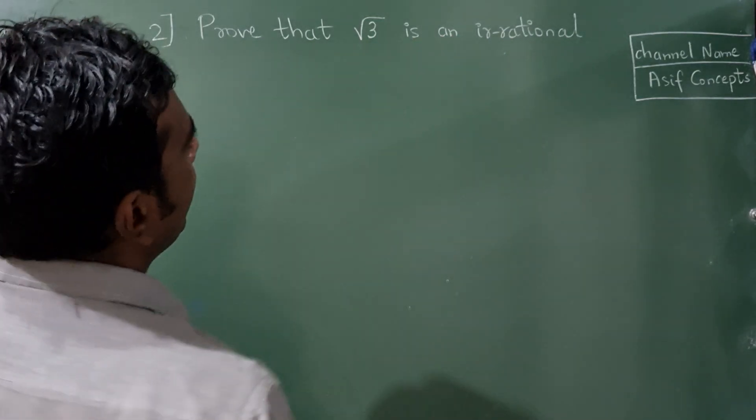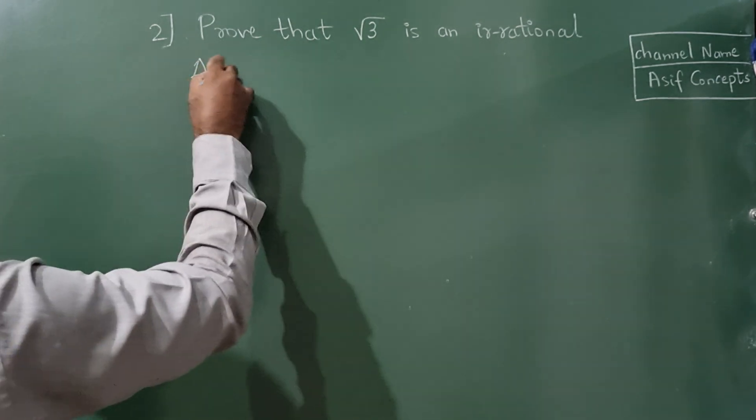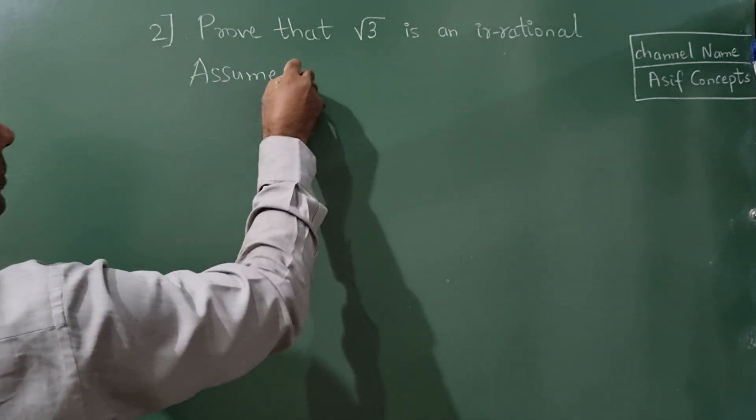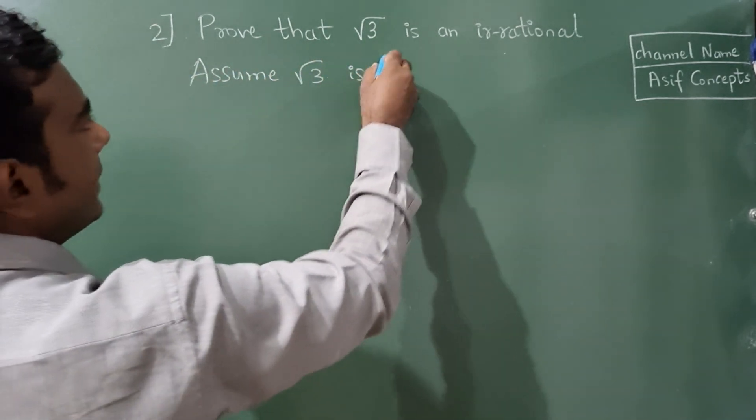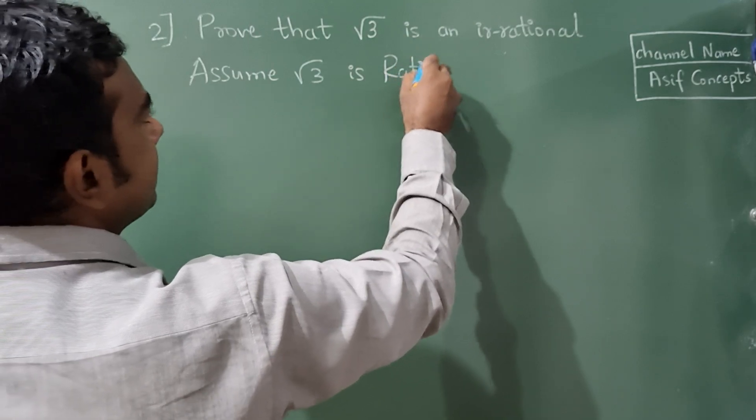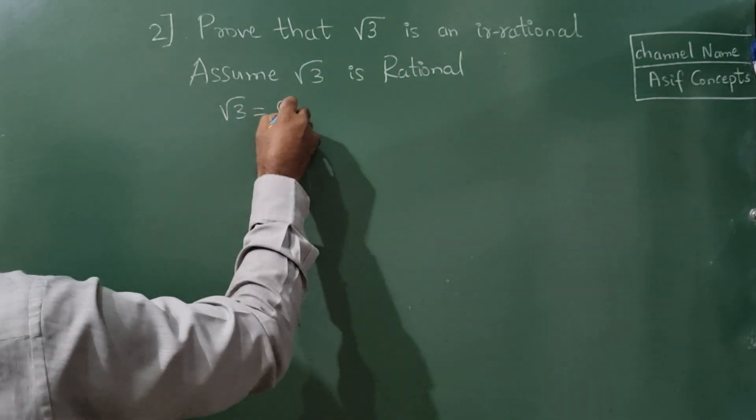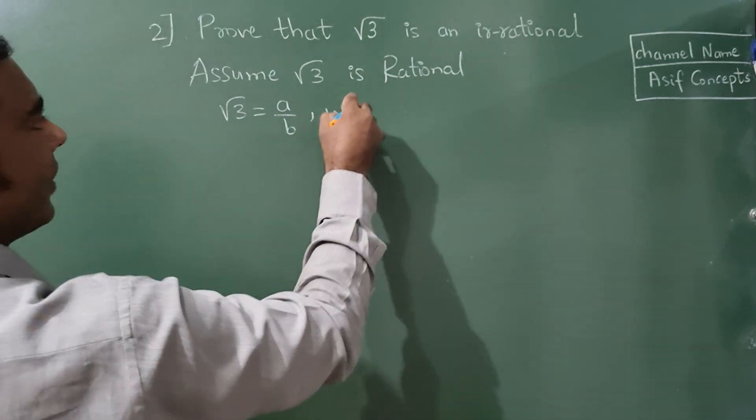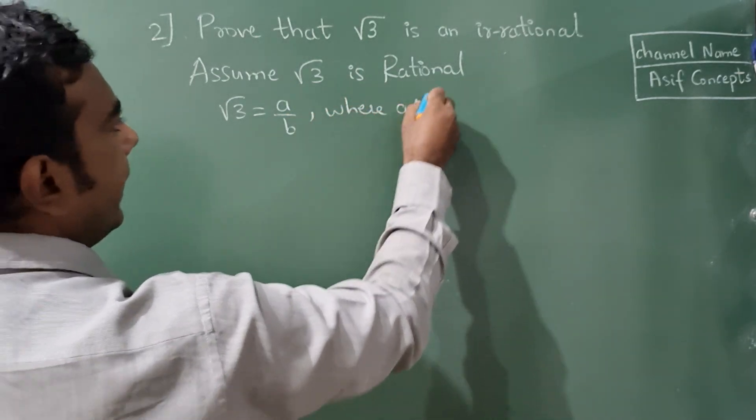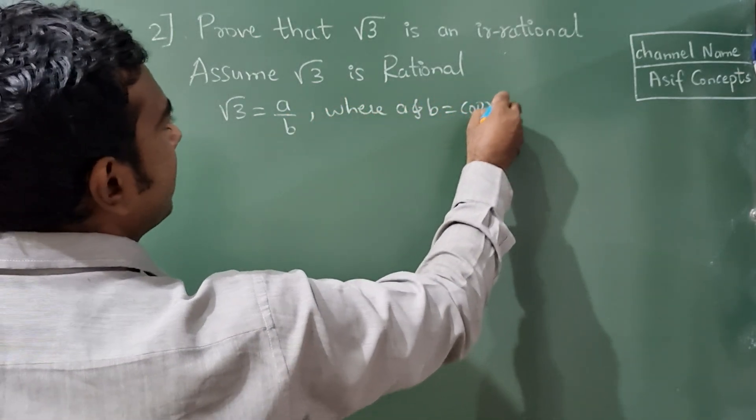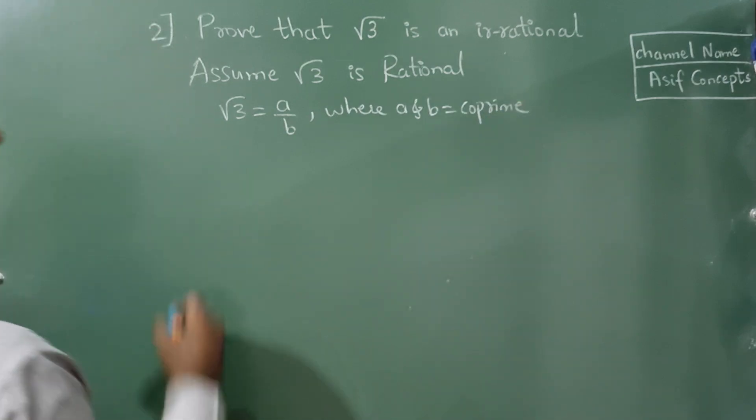Prove that root 3 is an irrational number. Now, let us assume root 3 is rational. Root 3 equals a by b, where a and b are co-prime numbers.